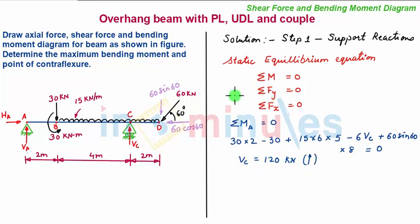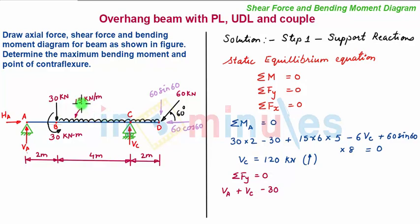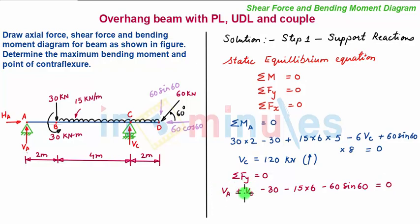Using the second equilibrium equation, ΣFY = 0, with upward forces positive and downward forces negative: the upward forces are VA and VC. The downward forces are the 30 kN point load, the UDL of 15 × 6 = 90 kN, and the vertical component 60 sin 60. Substituting VC = 120 kN and solving gives VA = 30 kN, acting upward, confirming the assumed direction is correct.